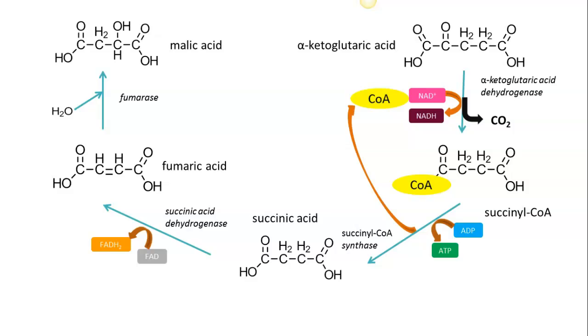Malic acid then undergoes a process using an enzyme called malic acid dehydrogenase, and as we do this we take an NAD and we create an NADH. The resultant material is oxaloacetic acid. So we are back where we started from.